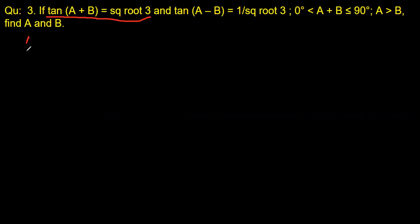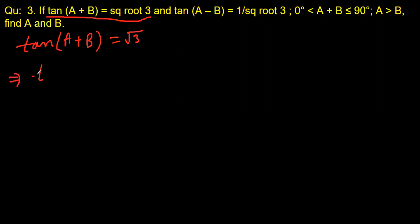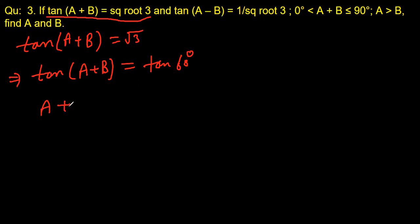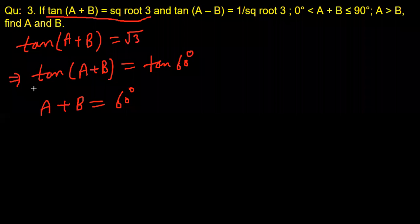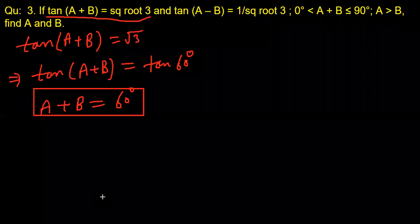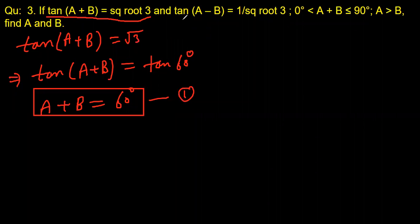Let's take the first piece of information: tan(a+b) = √3. We know that tan(60°) = √3, so we can write tan(a+b) = tan(60°). Since tan appears on both sides, we can cancel it, giving us a+b = 60°. Let's call this equation number one.